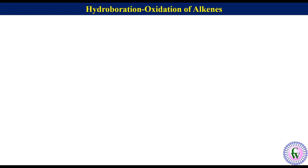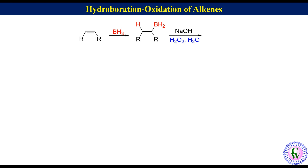As evident from its name, it is the combination of two reactions: the reaction of an alkene with borane to produce organoborane, and after that the reaction of organoborane with alkaline hydrogen peroxide to produce alcohol. Thus the overall hydroboration oxidation is equivalent to the addition of a water molecule to an alkene.